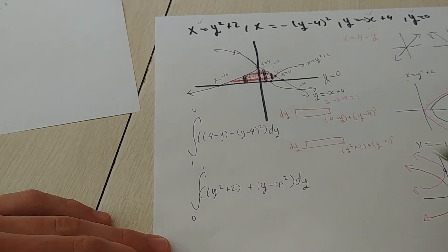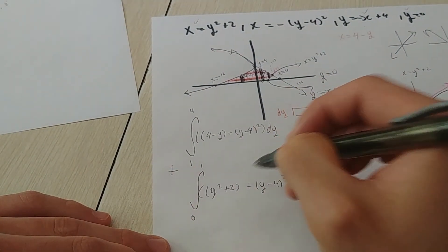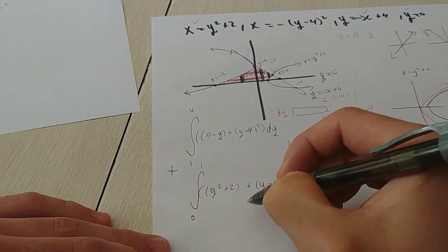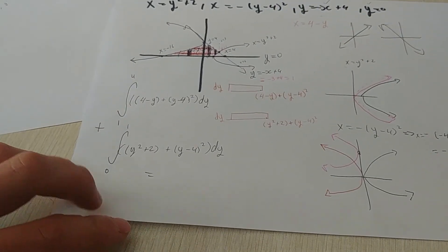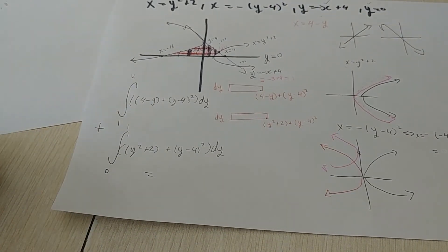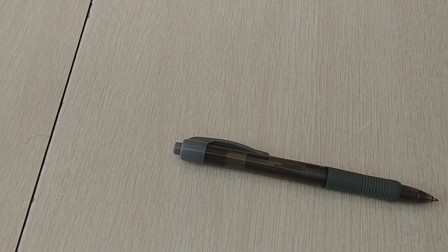If we solve both integrals and add up the areas, we get the total area between the curves. I'm not going to do that on camera as it will take a while, but I'll write down the final answer. Thank you for watching — it was a long video, but math is cool!